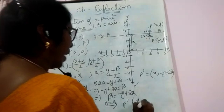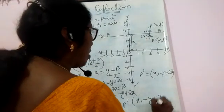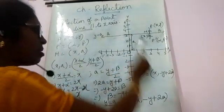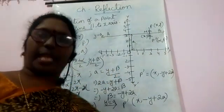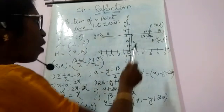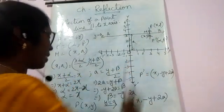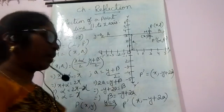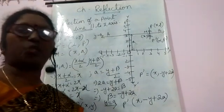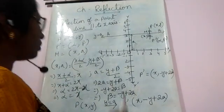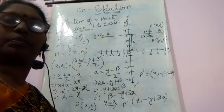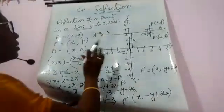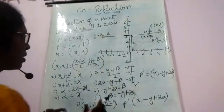So when point P(x,y) reflects through the line y = a, the image is P'(x, -y + 2a). When a point reflects through the x-axis its y-coordinate changes sign. In the same way, when a point reflects through a line parallel to the x-axis, its y-coordinate becomes -y + 2a. I believe you understood. Now let me give you an example.